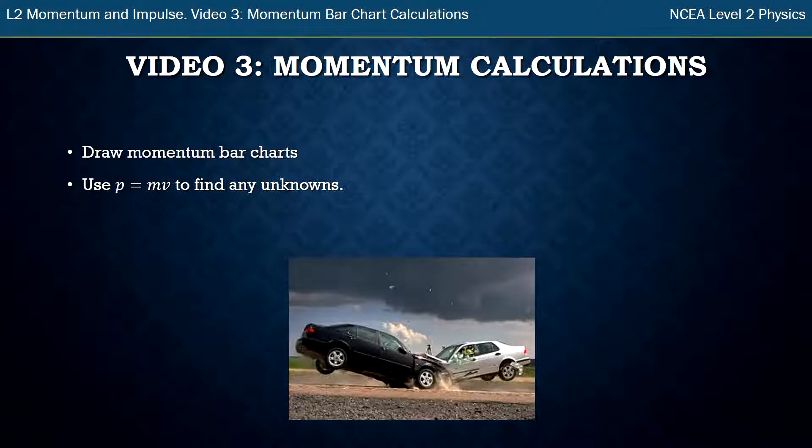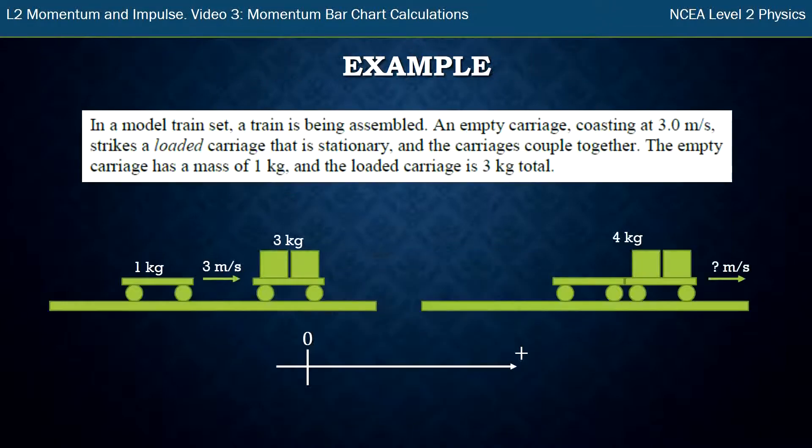We're going to use the same example from video two, so if you haven't watched that you need to go back and watch it so you can see how we got the momentum bar charts. But as a quick recap, we have a little toy train set and an unloaded cart hits a loaded cart and then they stick together and move off at some unknown velocity. We had to find our positive direction that helps us work out what's positive and negative in our momentum bar charts.